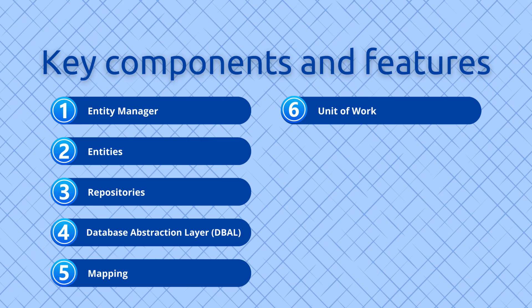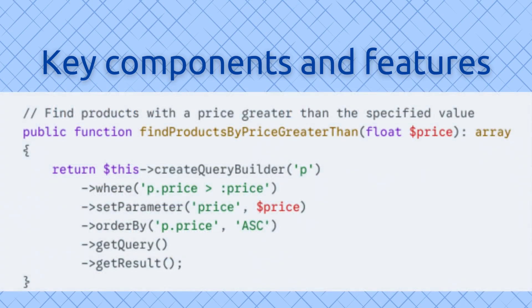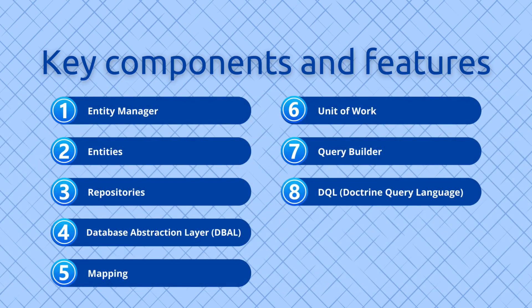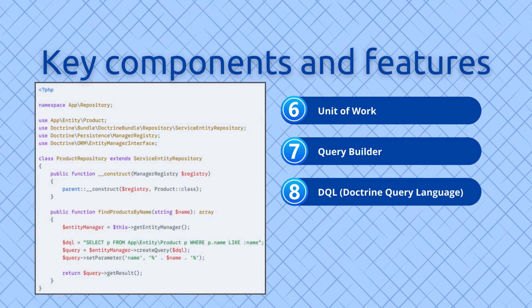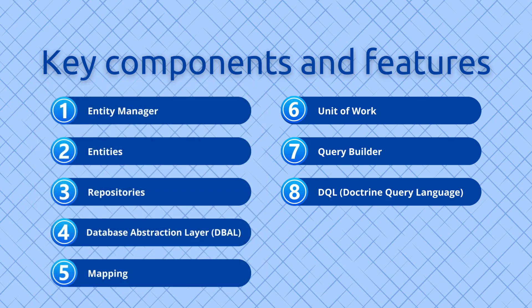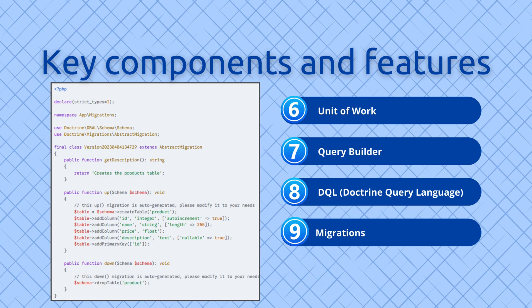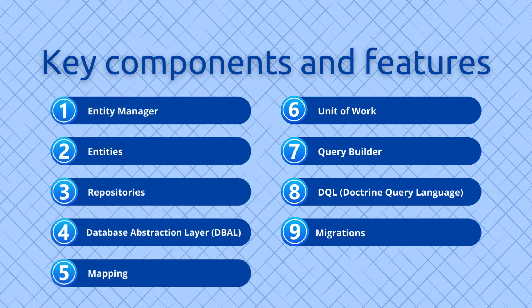Sixth, Unit of Work — a pattern that keeps track of all changes made to objects within a transaction, allowing you to group multiple operations into a single transaction and ensuring data consistency. Seventh, Query Builder — a flexible tool for constructing complex SQL queries programmatically without writing raw SQL. Eighth, DQL (Doctrine Query Language) — a SQL-like language for querying objects directly. Ninth, Migrations — a system for managing changes to your database schema over time; Doctrine can automatically generate SQL statements to update your database based on changes to your entities.